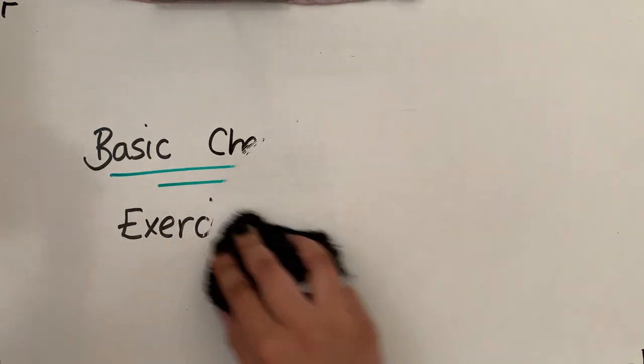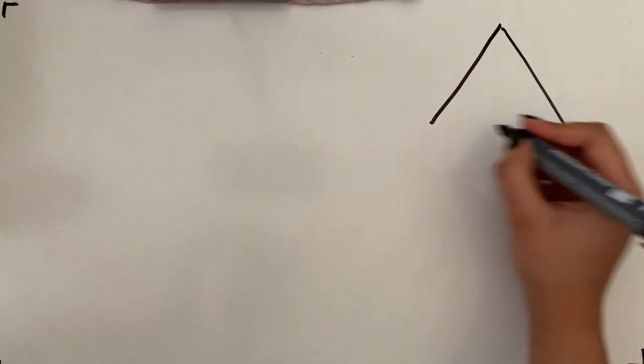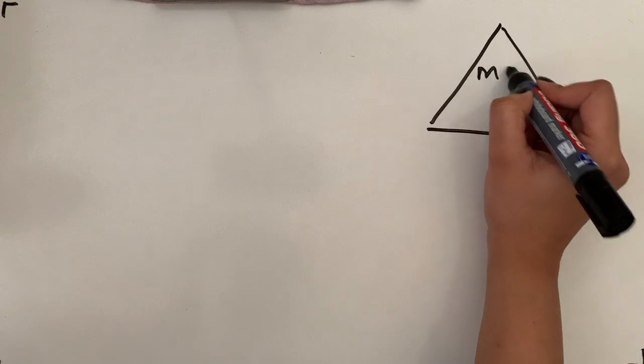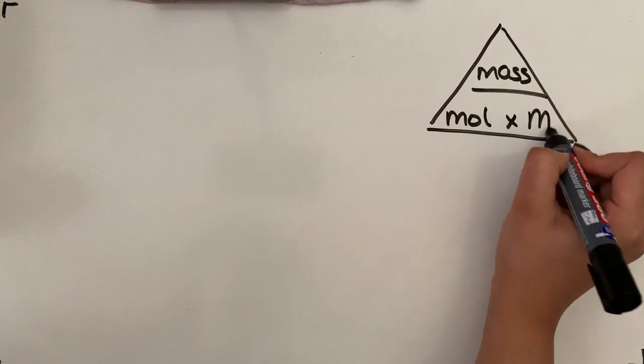So what we need to do is remind ourselves what the equation is that links moles into mass. We're drawing the triangle form as we had before. So mass at the top, moles times MR at the bottom.